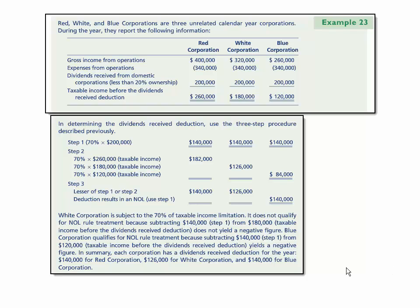Blue does qualify for the NOL rule because when we subtract $140,000 from $120,000 taxable income before the dividend received deduction, they get a negative amount. So the result is each corporation has a dividend received deduction for the year: $140,000 for Red, $126,000 for White, and $140,000 for Blue.